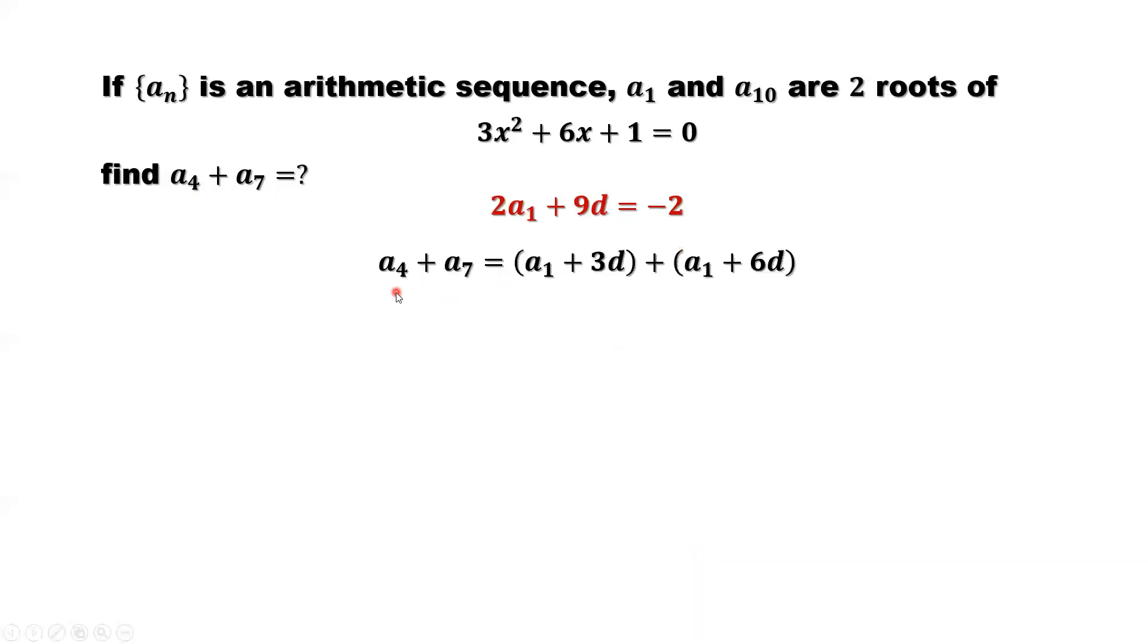We can do the same way. A4 equals A1 plus 3 times common difference. A7 equals A1 plus 6 times common difference. Simplify. We have 2A1 plus 9D.